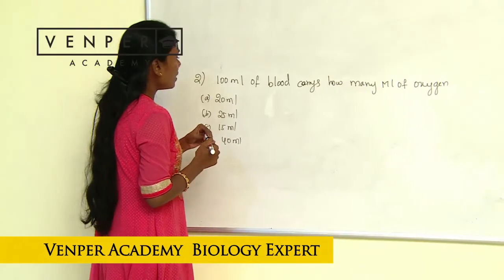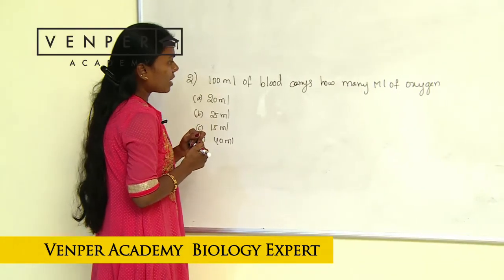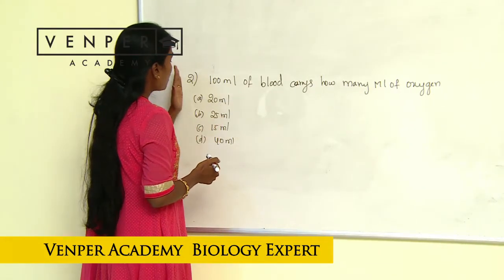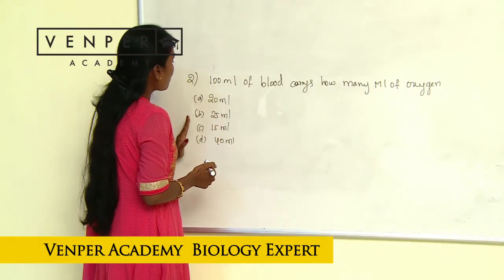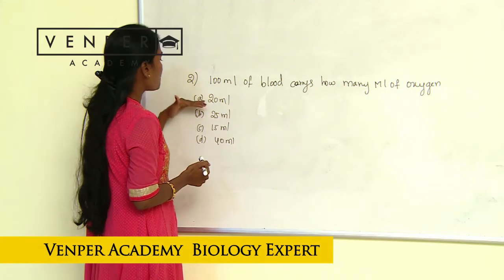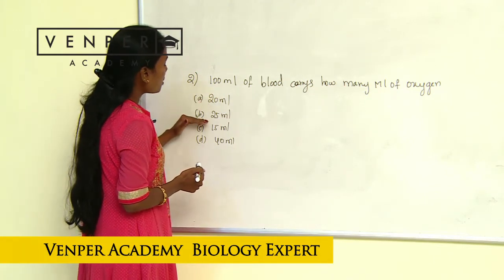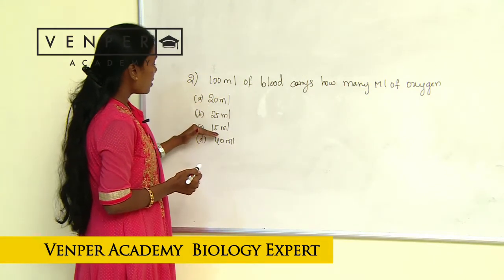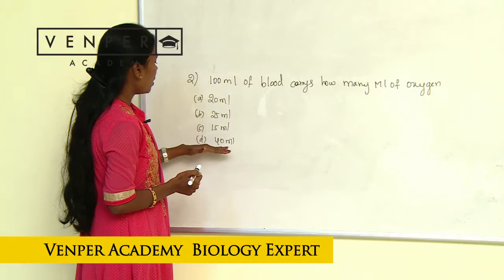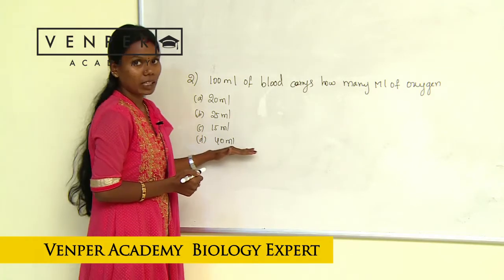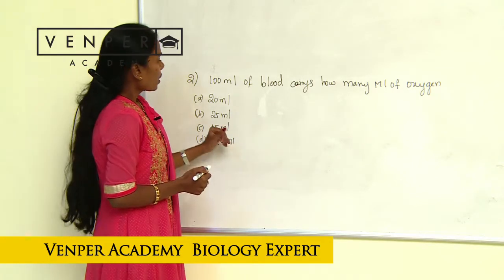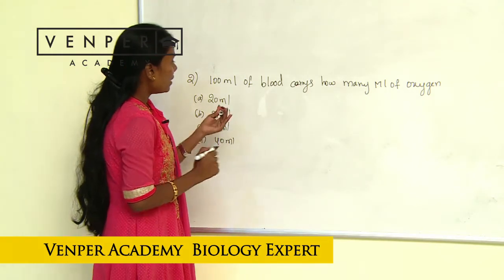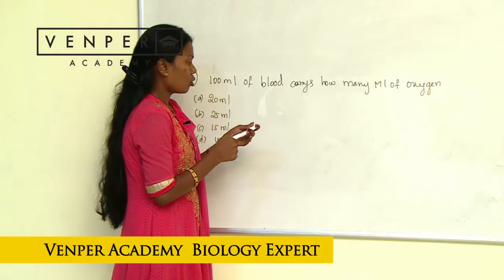Our question is: 100 ml of blood carries how many ml of oxygen? When it comes to the options, we have option A is 20 ml, option B is 25 ml, option C is 15 ml, and option D is 40 ml. So you might have learnt about blood as well as hemoglobin.